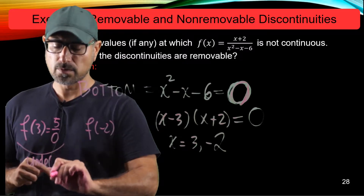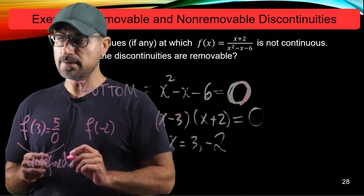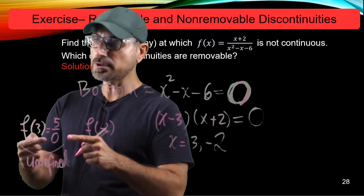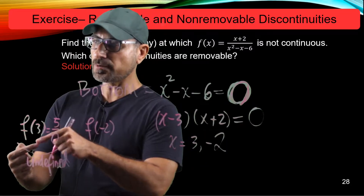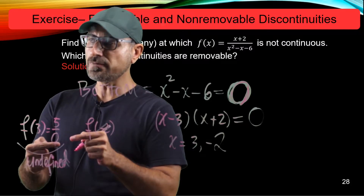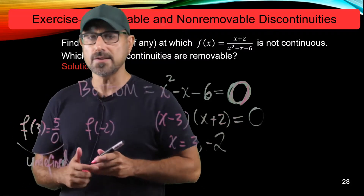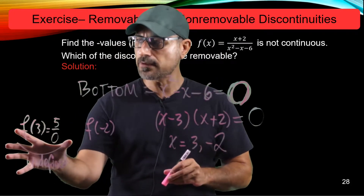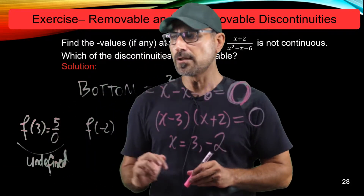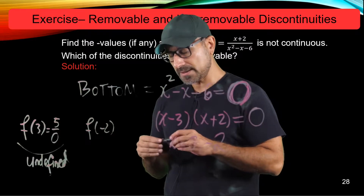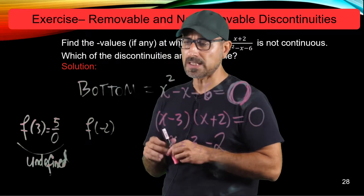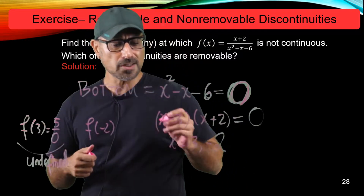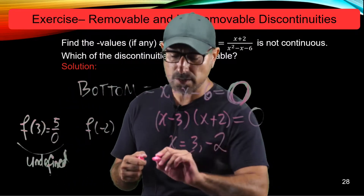It's undefined in the sense that as x gets closer to 3 from the left or right, the function values increase or decrease without bound. Investigating the limit at x equals 3 from the left or from the right, they tend to plus or minus infinity. So this discontinuity is non-removable.